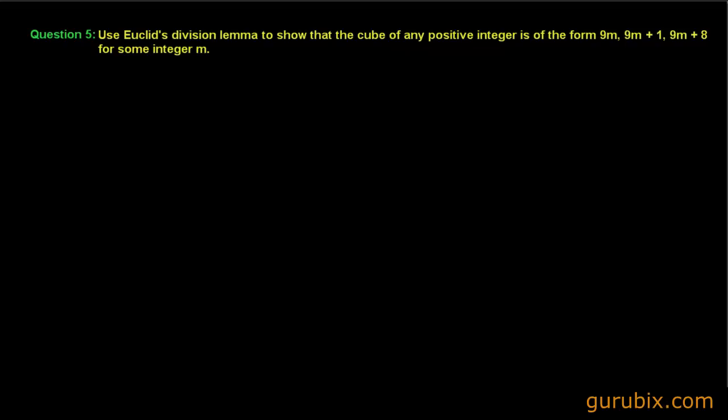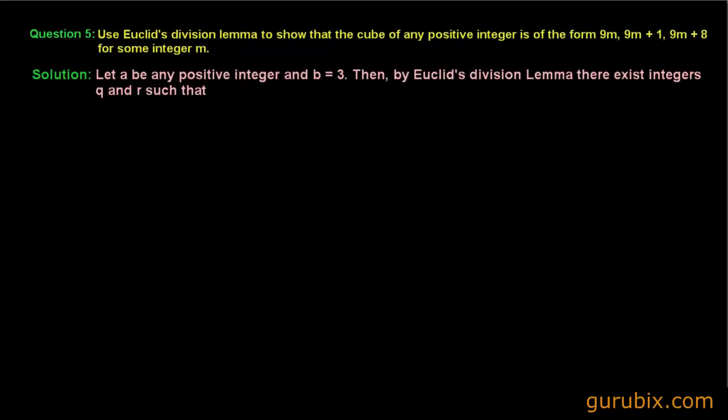How will you solve it? Let us start this question by taking a. Let a be any positive integer and b equals 3. This is important. Then by Euclid's division lemma, there exist integers q and r such that a equals 3q plus r where r is greater than or equal to 0 but less than 3.